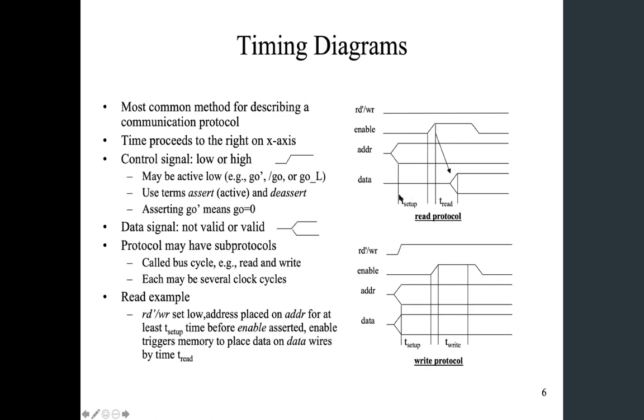That's why you see the address signal is actually becoming valid long before the enable signal changing from zero to one. And this time, you often see arrow or double sided arrow between this line and this line, that's to indicate this is the setup time. So that's the time we have to have in order for the read to happen properly.